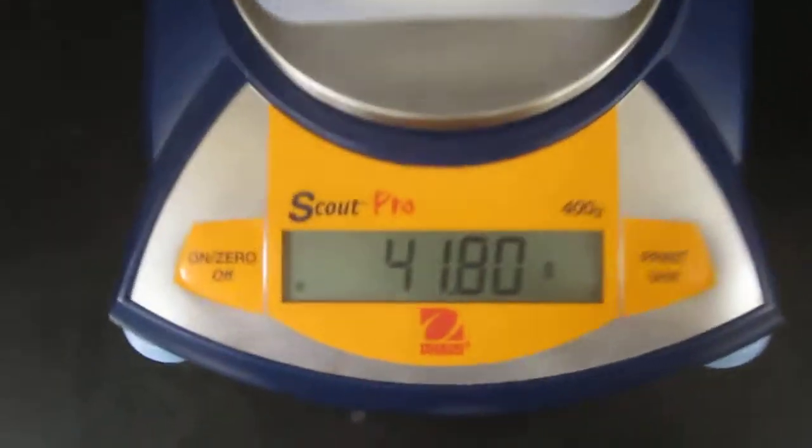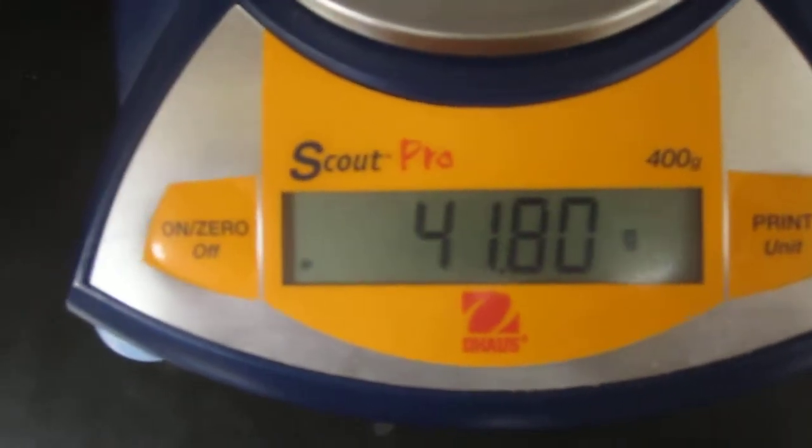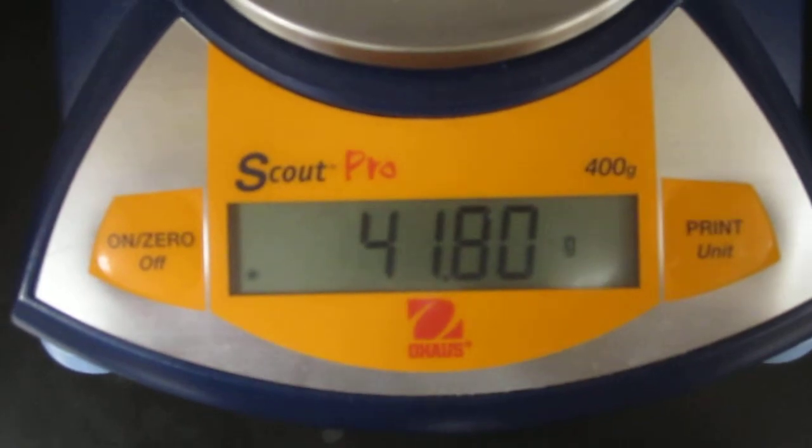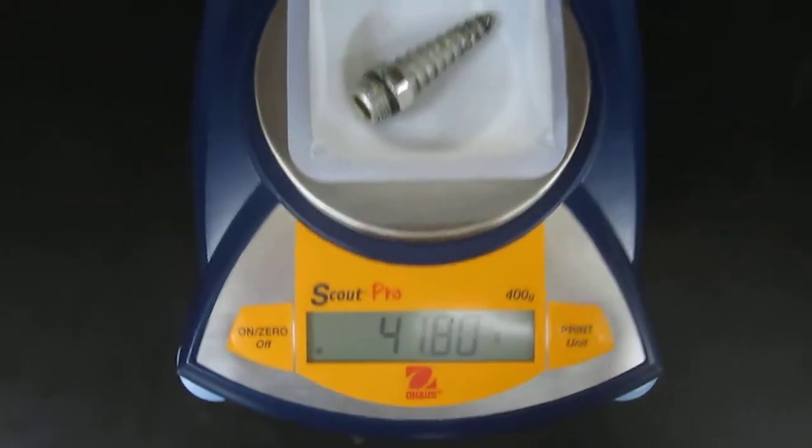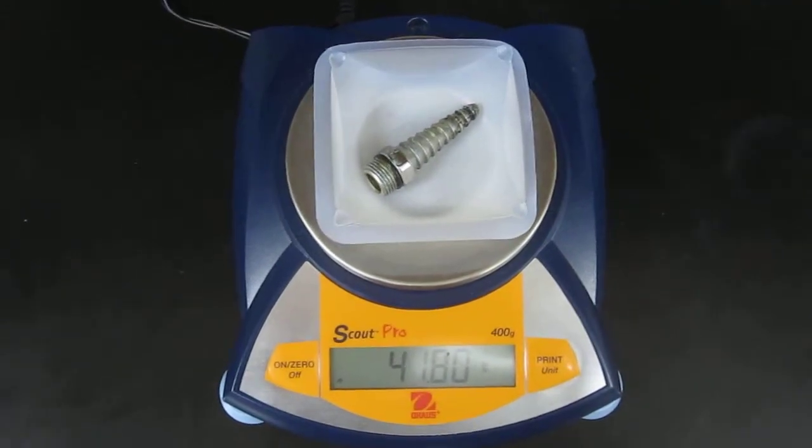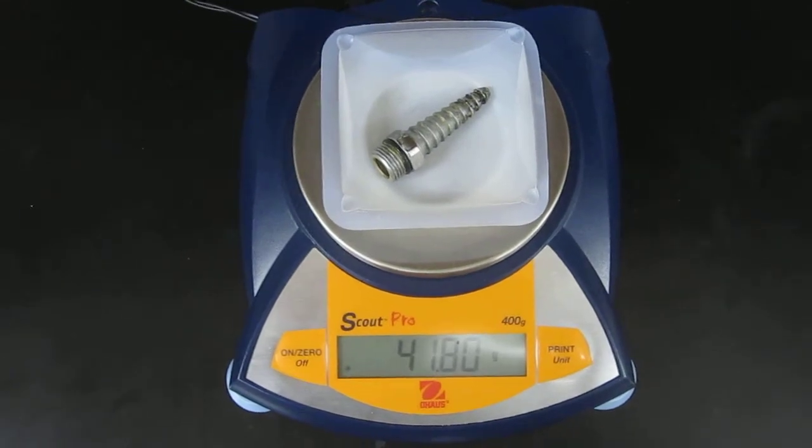So you can see the irregular object weighs 41.80 grams. So we are going to use that mass measurement to eventually figure out the density.